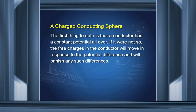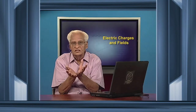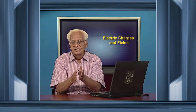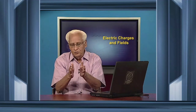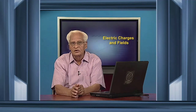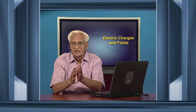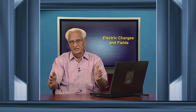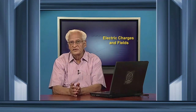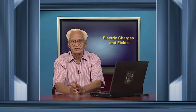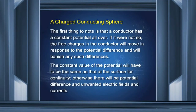Let us now take a charged conducting sphere. The first thing to note is that a conductor has a constant potential all over — it is an equipotential surface. Because if there is a difference of potential, that would mean an electric field that would apply force on charges and the charges will move; they would not remain static. Therefore, there cannot be any potential difference between two points on the surface of a conductor.